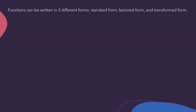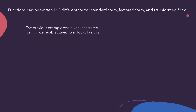Functions can be written in three different forms: standard form, factored form, and transformed form. In grade 10 we called it vertex form because we only talked about quadratics which have a vertex, but all of our functions don't have a vertex, so we call it transformed form. The previous example we had was in factored form — it was all factored for us. In general, everything is factored and the greatest common factor would be your A value.